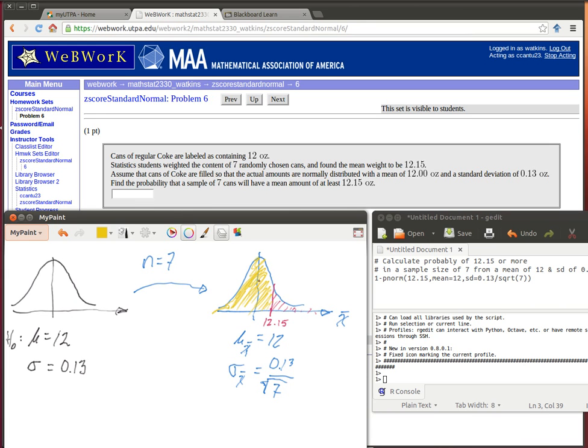Because we could just find the P norm of 12.15 with a mean of 12 and a standard deviation of whatever this turns out to be. Now that yellow area would be the wrong area. What we want is the red area so it would be 1 minus that yellow area.